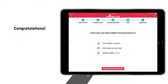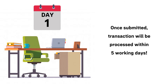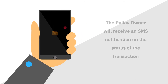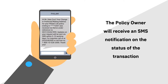Congratulations! You have successfully submitted your request to update your mailing address. After the submission, this will be processed within 5 working days. The policy owner will also receive an SMS notification on the status of the transaction.